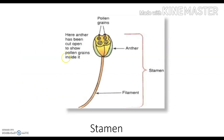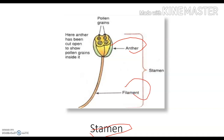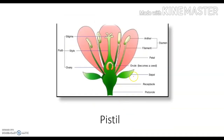This is the image of a stamen, which is the male reproductive part of a flower. It consists of an anther and a filament — both together are called the stamen. The pistil is the female reproductive part, which consists of the stigma, style, and ovary, as you can see clearly in the image.